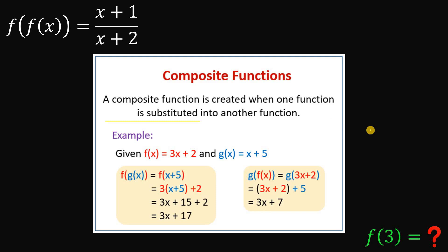Here's an example: given f of x equals three x plus two and g of x equals x plus five, if we want to find f of g of x, this is equivalent to f of x plus five. We replace all x in f of x with x plus five, so this becomes three multiplied by x plus five plus two, which simplifies to three x plus seventeen.